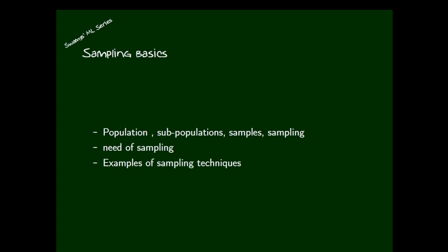Sampling basics: first we are going to discuss the basic points — population, subpopulation, samples, and sampling. Population is actually the entire universe on which we are going to adopt a particular study. Subpopulations are subsets of this population. Samples are a meaningful cross-section of the population. Sampling is a systematic procedure to collect samples from a population.